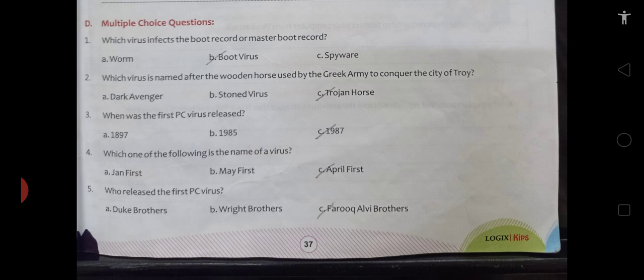Next is: which virus is named after the wooden horse used by the Greek army to conquer the city of Troy? So the answer to it will be Trojan horse. Then when was the first PC virus released? It was released in 1987. So the answer is 1987.